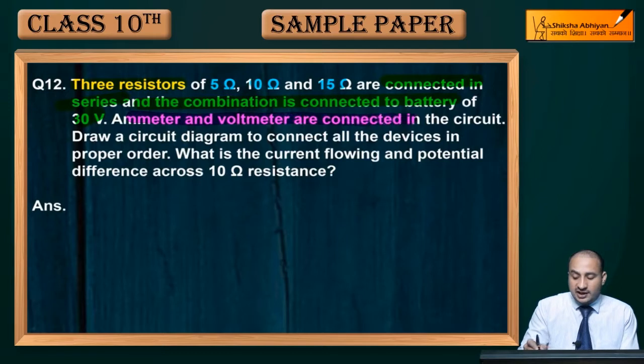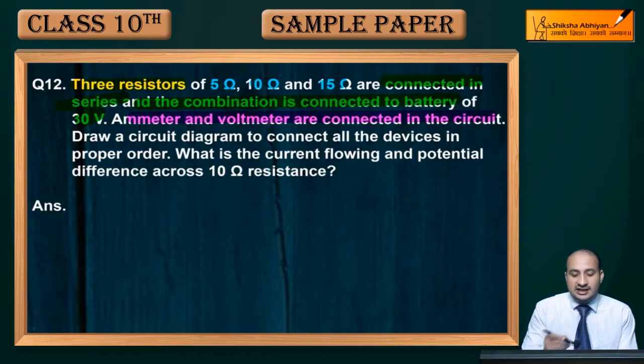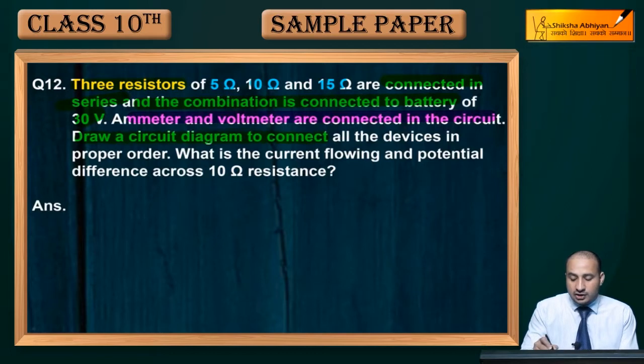Ammeter and voltmeter are connected in the circuit. You need ammeter to measure current and voltmeter to measure the potential difference. Draw a circuit diagram to connect all the devices in the proper order.